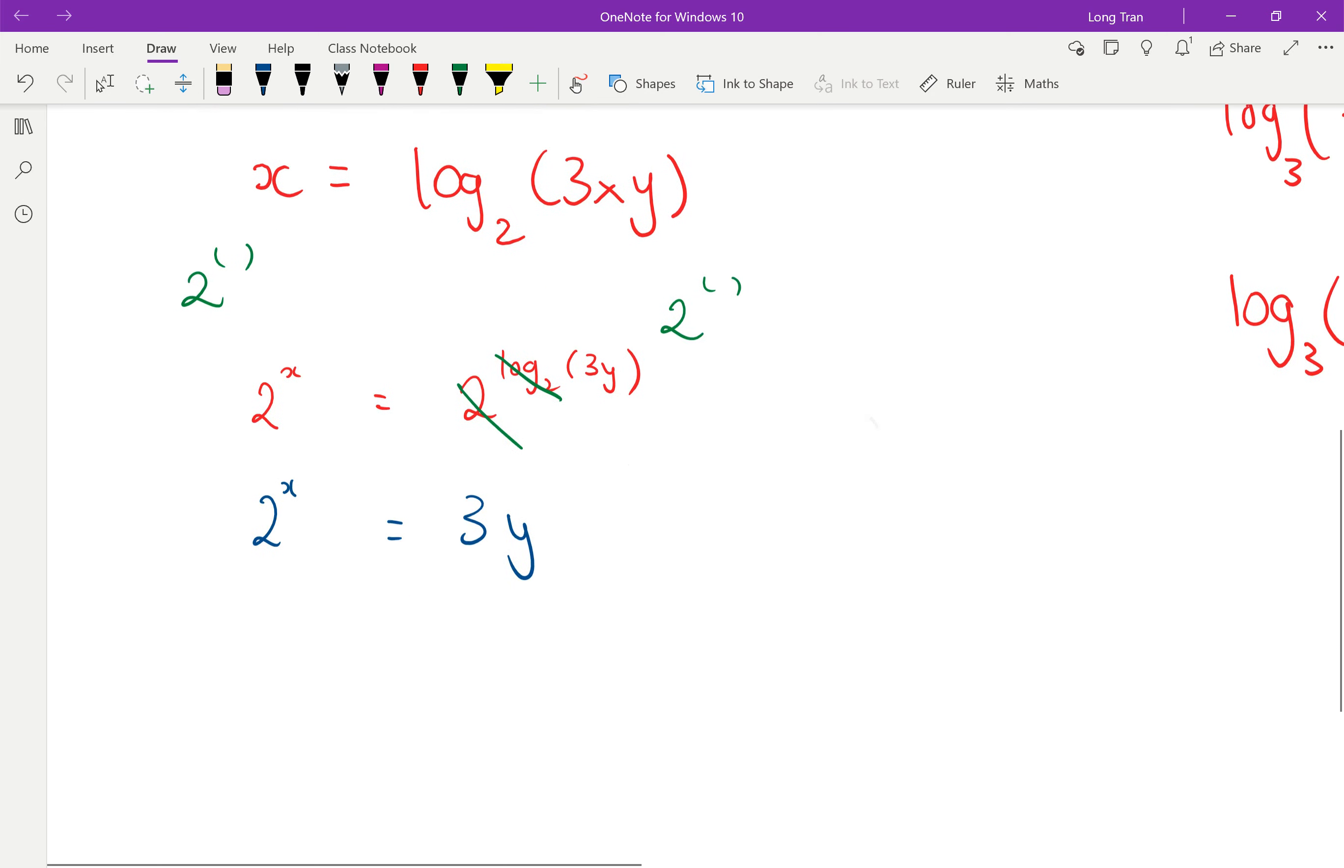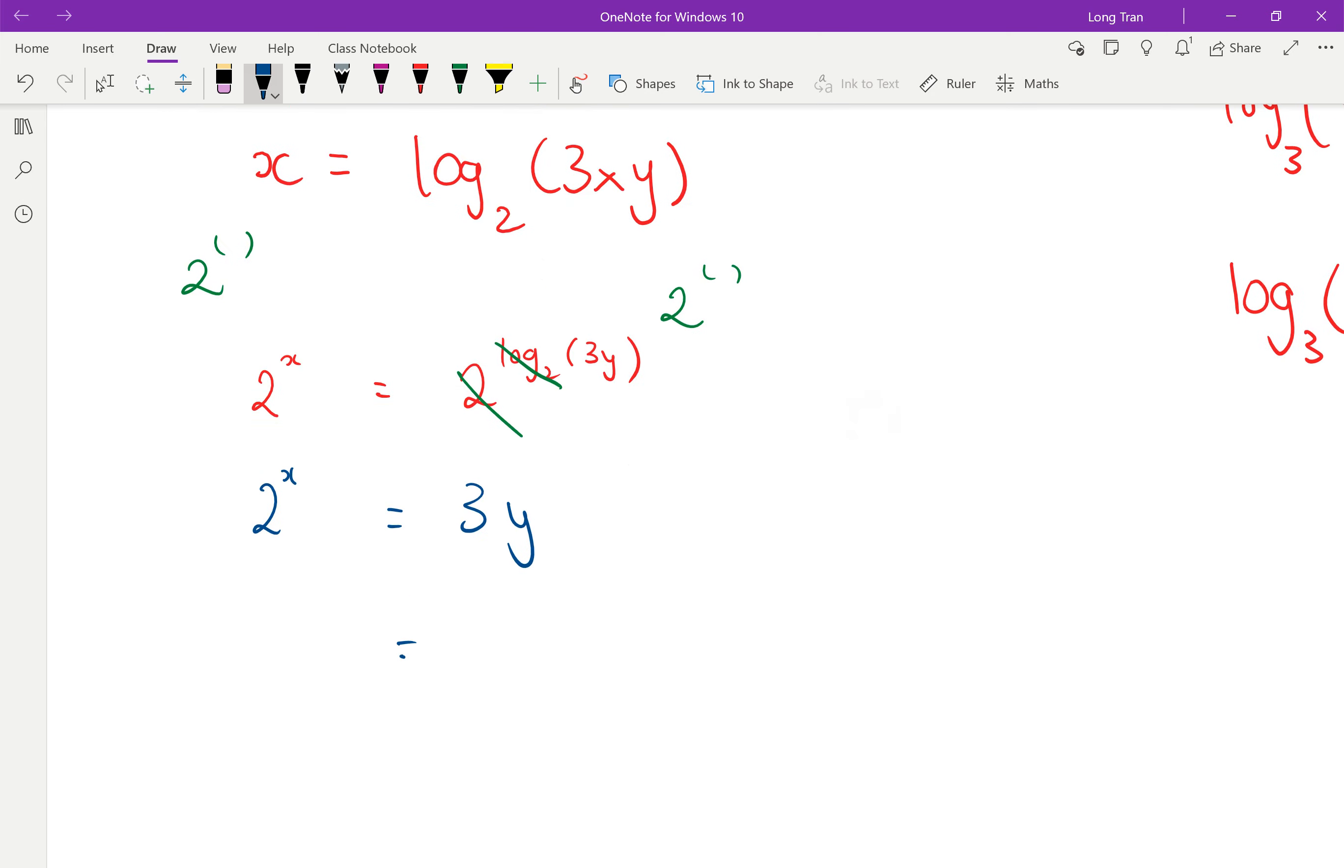So here now I can finally get rid of the 3 by doing the inverse of times, which is divide. I divide both sides by 3, and that's why 3 divided by 3 is 1 and y equals 2x over 3, or 1 third of 2 to the x.